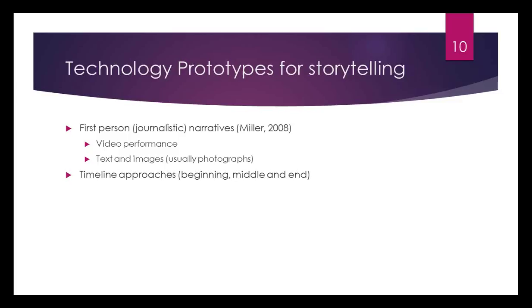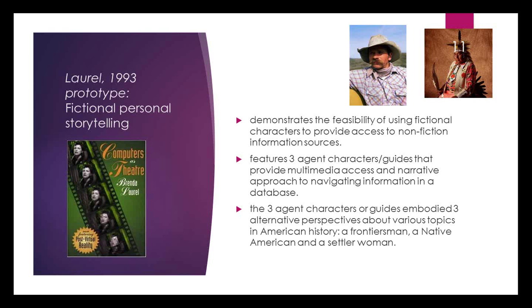So I want to look at some technology prototypes for storytelling. Generally, we are accustomed to first-person journalistic narratives in digital storytelling, which usually includes either video performance or text and images, usually photographs. And then there are the timeline approaches, where there's a beginning, middle, and end, and you can scroll through to see how a story unfolds. But today I want to focus on two main prototypes that I feel have great relevance to our OPAC.